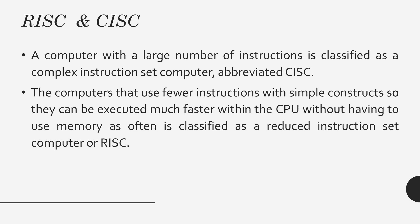RISC instructions can be executed much faster. The reason for being faster is using memory less and using the register set more. In the example, we also saw that more registers were used and memory was only used when loading and storing something.